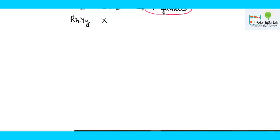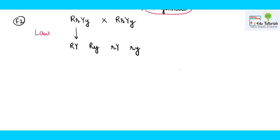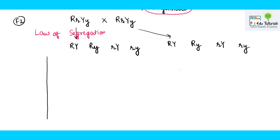Since we are producing the F2 generation by selfing the F1, the other parent has the same genotype capital R small r capital Y small y, giving the same four gametes: capital R capital Y, capital R small y, small r capital Y, and small r small y. These gametes form by the law of segregation in both the male and female parents. We will now construct a Punnett square.